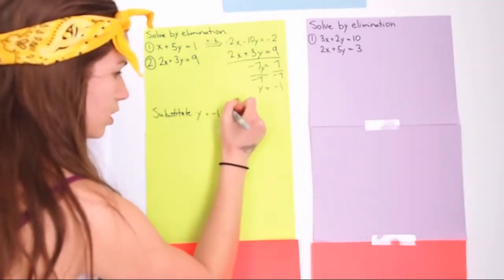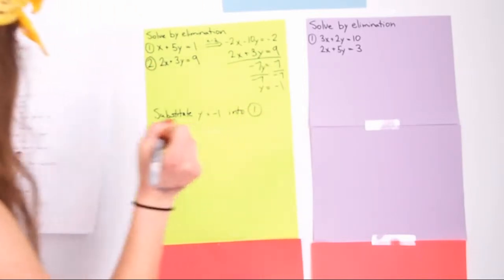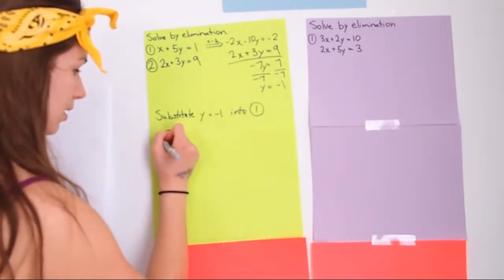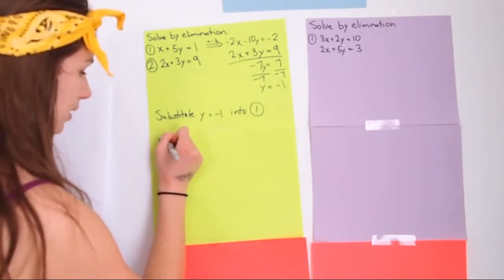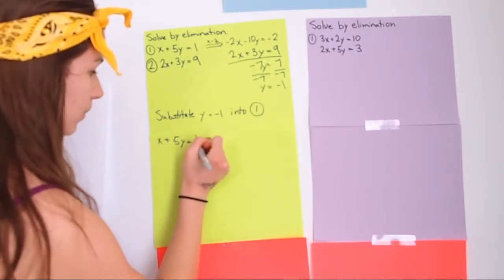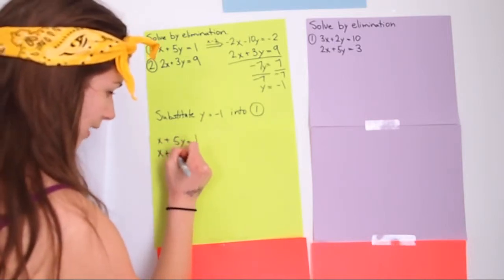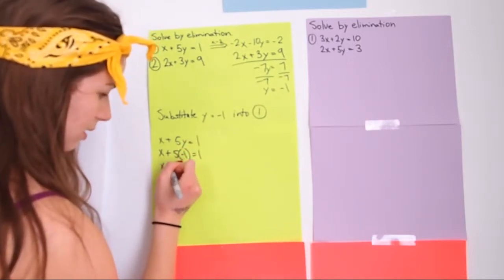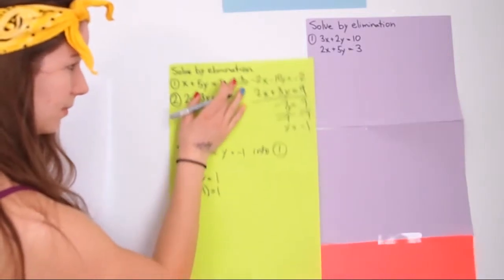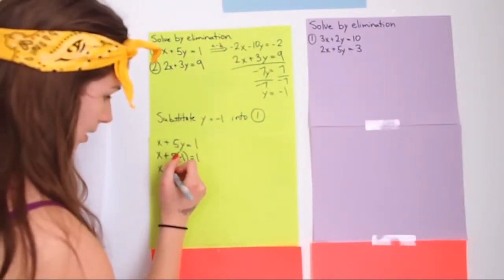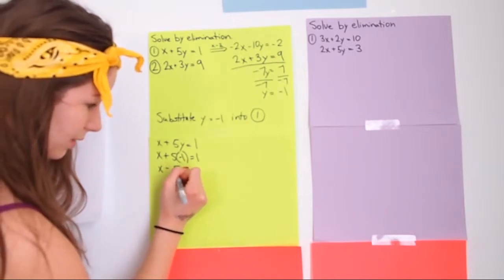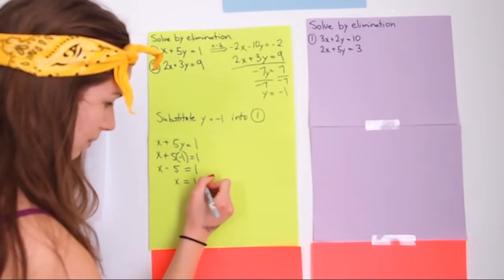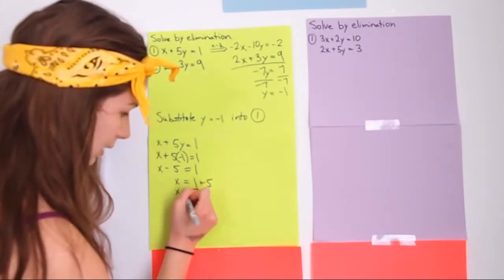Substitute into equation 1. So you get x plus 5y equals 1. Substitute y equals negative 1: x plus 5 times negative 1 equals 1, so x minus 5 equals 1, therefore x equals 6.